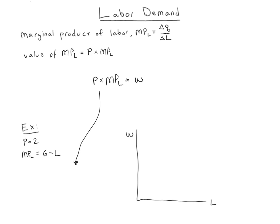Now we can put these together with our key equation. Plugging in the specific values we have, we get 2 times (6 minus L) equals our wage. We can distribute to get 12 minus 2L equals W. This is our labor demand function. If we wanted to plot our labor demand, we can just take this equation and go over onto the graph, because the format we like when we plot has the wage on the vertical axis.